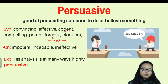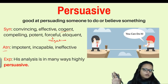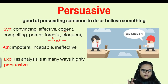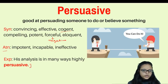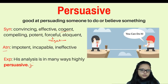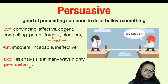Antonym of persuasive: impotent — it has no power, incapable, ineffective. Example: 'His analysis is in many ways highly persuasive' — meaning his analysis has some really good points, so it is persuasive.